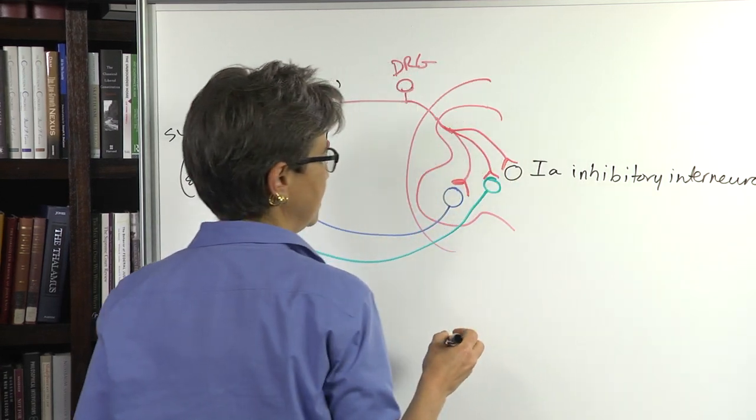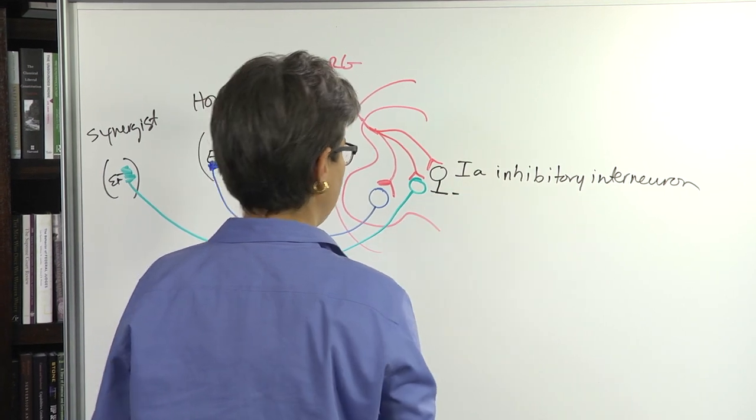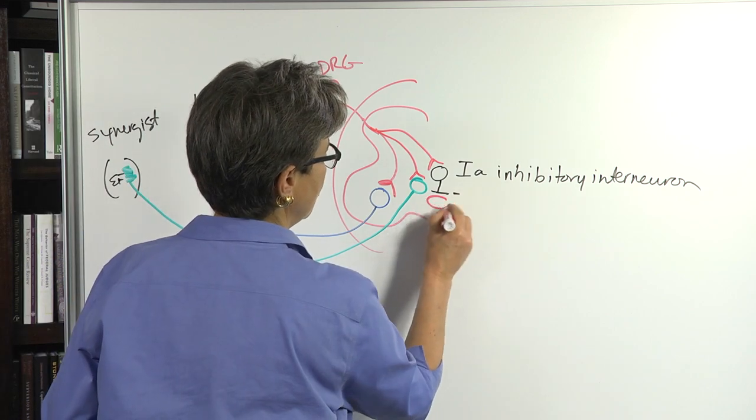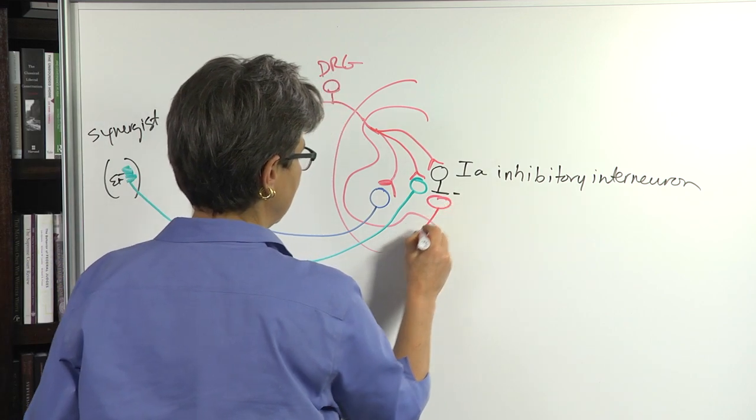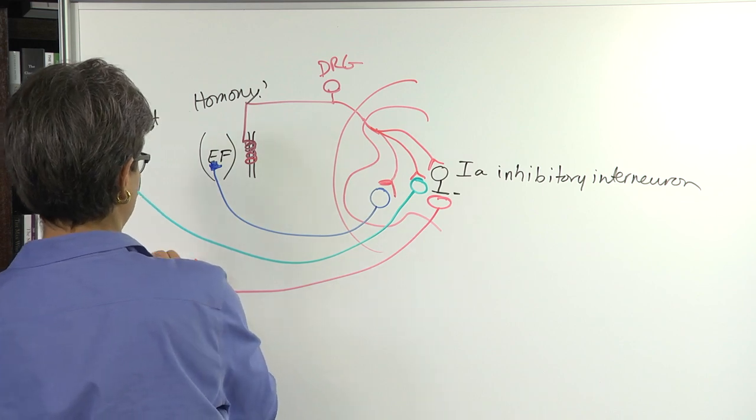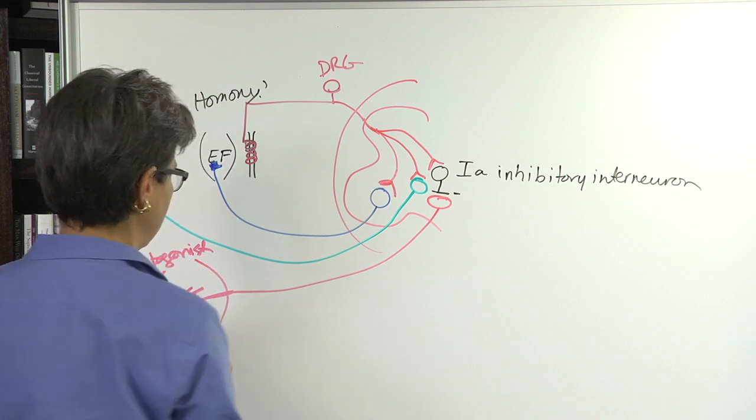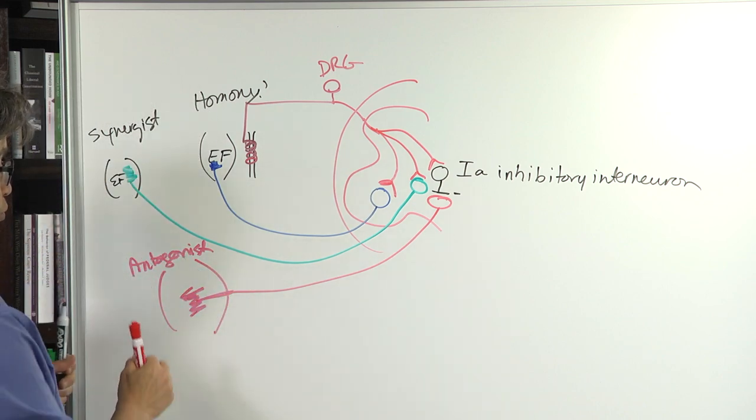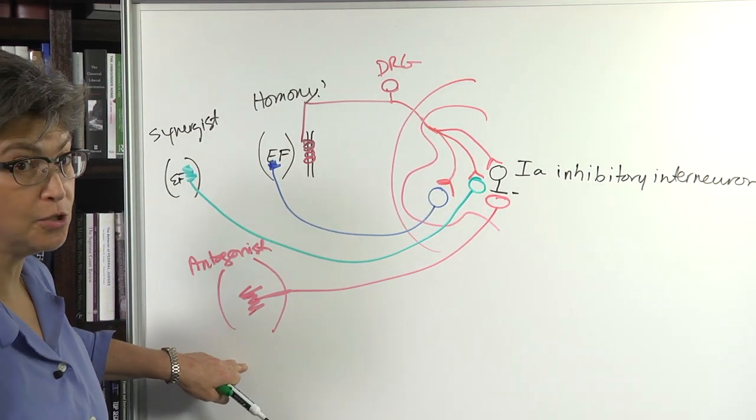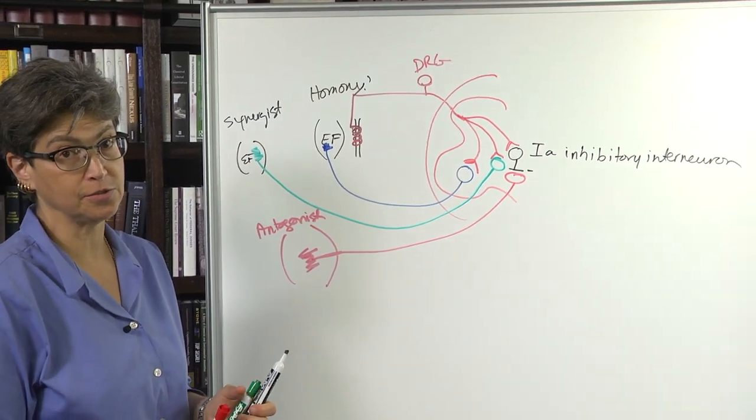And the 1A inhibitory interneuron is then going to inhibit a motor neuron that innervates the antagonist.